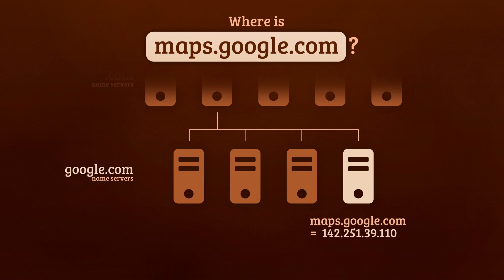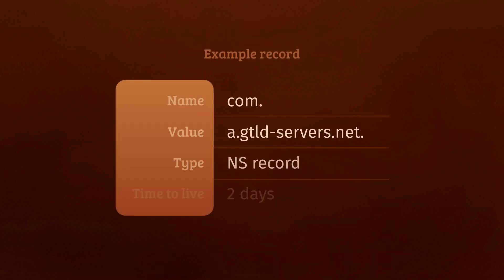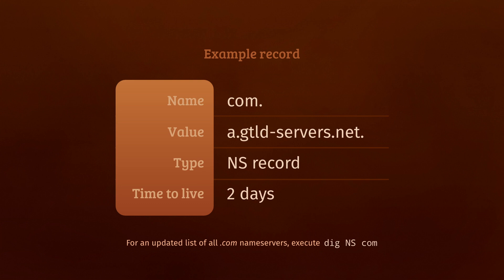But here's the thing. When a name server refers you to a different one, it does so with an NS record. But that record doesn't contain the server's IP address. Let's take a closer look at one a root server sent us when we asked it about maps.google.com.